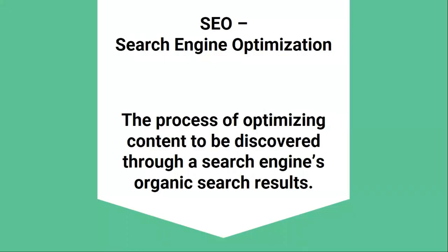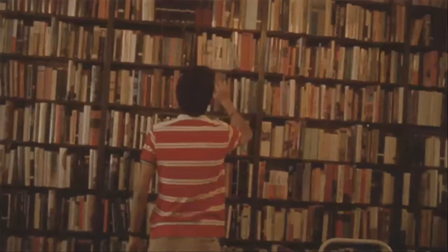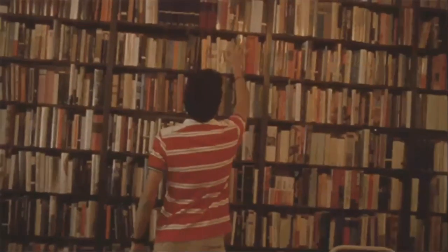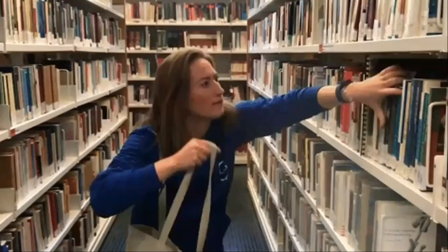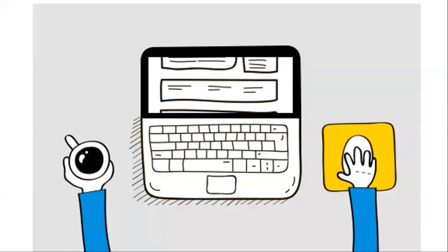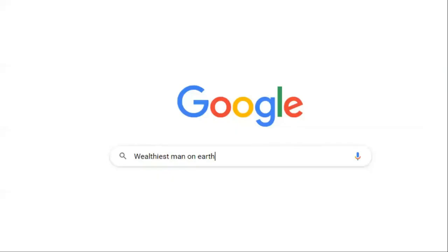SEO stands for search engine optimization, and it's the process of optimizing content to be discovered through a search engine's organic search results. If you're completely new to SEO, it's easiest to think of search engines as libraries. But instead of storing books, they store copies of websites and web pages. So when you search for a query, the search engine will look through all pages in its index and try to return the most relevant results. And SEO helps demonstrate to search engines that your page is that particular result.